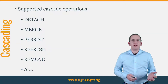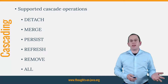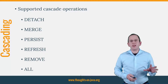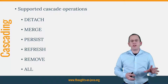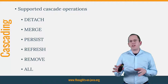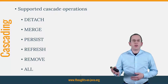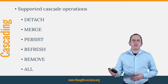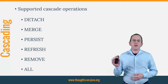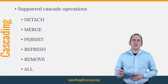You can tell Hibernate and any other JPA implementation to cascade certain operations you perform on an entity to its associated child entities. The only thing you have to do is to define the kind of operation you want to cascade to the child entities on the attribute that maps the association.